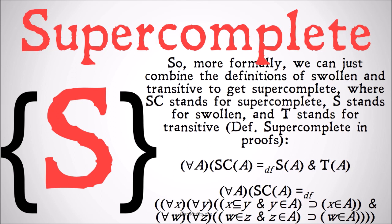More formally, we can just combine the definitions of swelled and transitive to get super complete. Where SC stands for super complete, S stands for swelled, and T stands for transitive. The definition is: for all A, A is super complete equals by definition A is swelled and A is transitive. You could just use identity and plug those in to get the full definition.